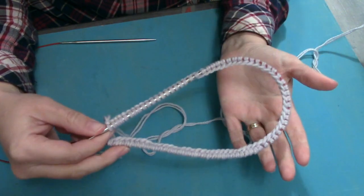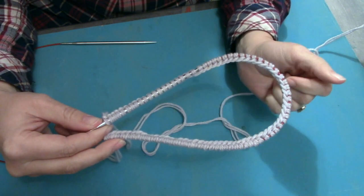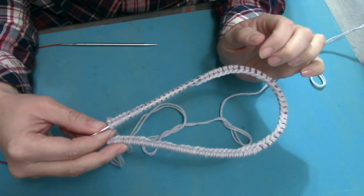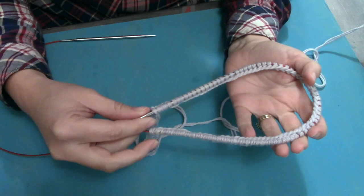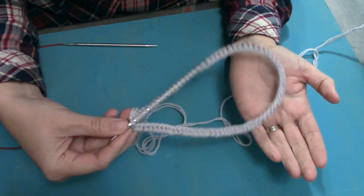Because when I join in the round we lose a stitch, so that means I'm going to tell you to cast on one more stitch than is actually needed for the pattern.